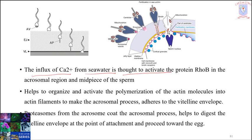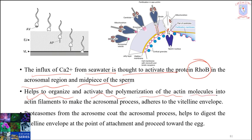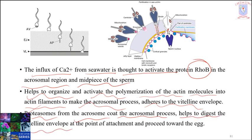The influx of calcium from the seawater is thought to activate another protein called RhoB in the acrosomal region and midpiece of the sperm, helping to organize and activate the polymerization of actin molecules into actin filaments to make the acrosomal process. The acrosomal process adheres to the vitelline envelope, and the acrosome contains lysogenic enzymes — one of them is a proteosome — that helps digest the vitelline envelope at the point of attachment and proceed towards the egg.